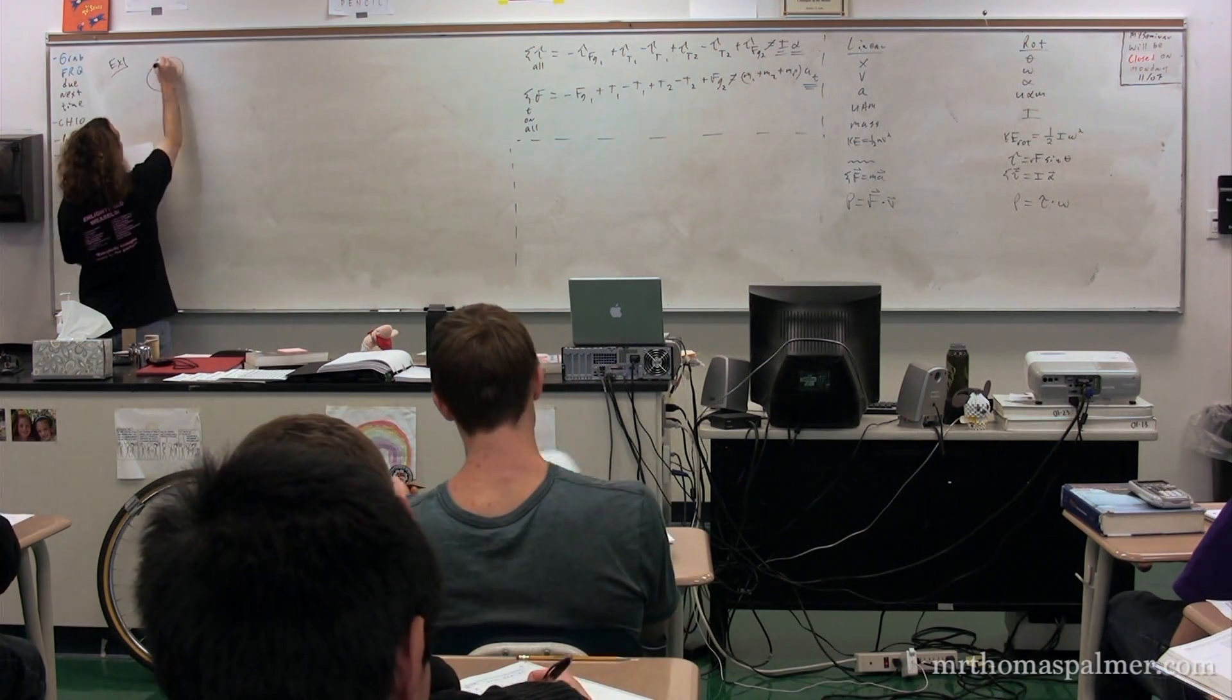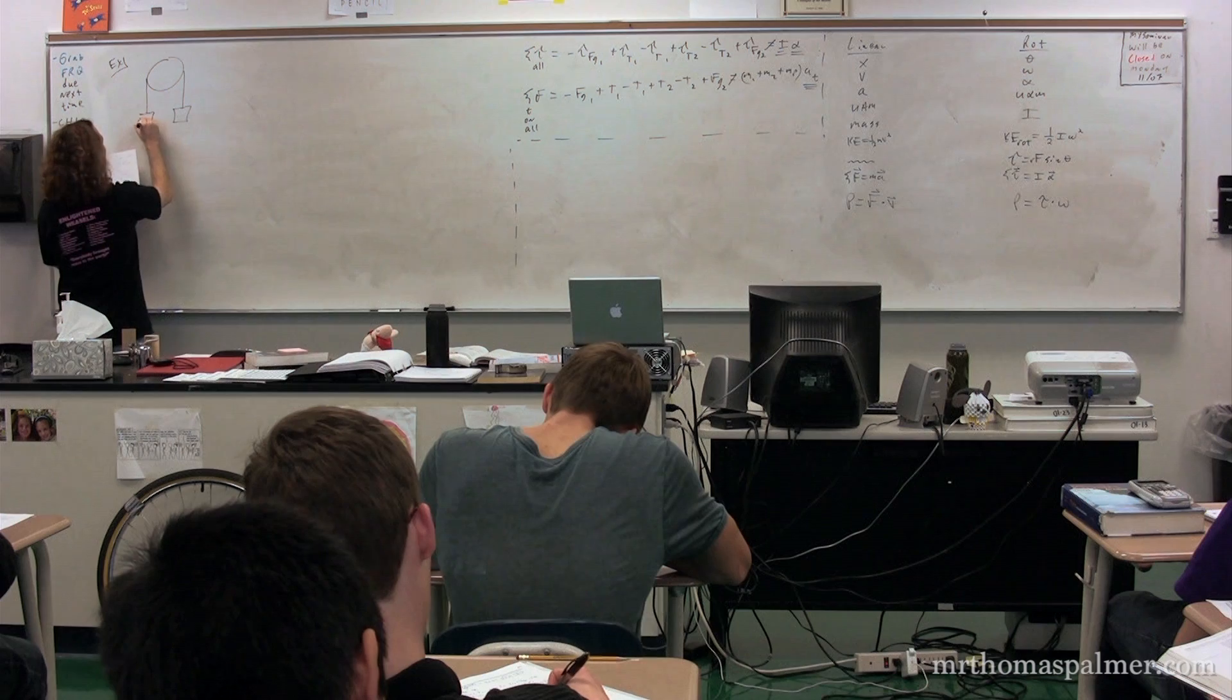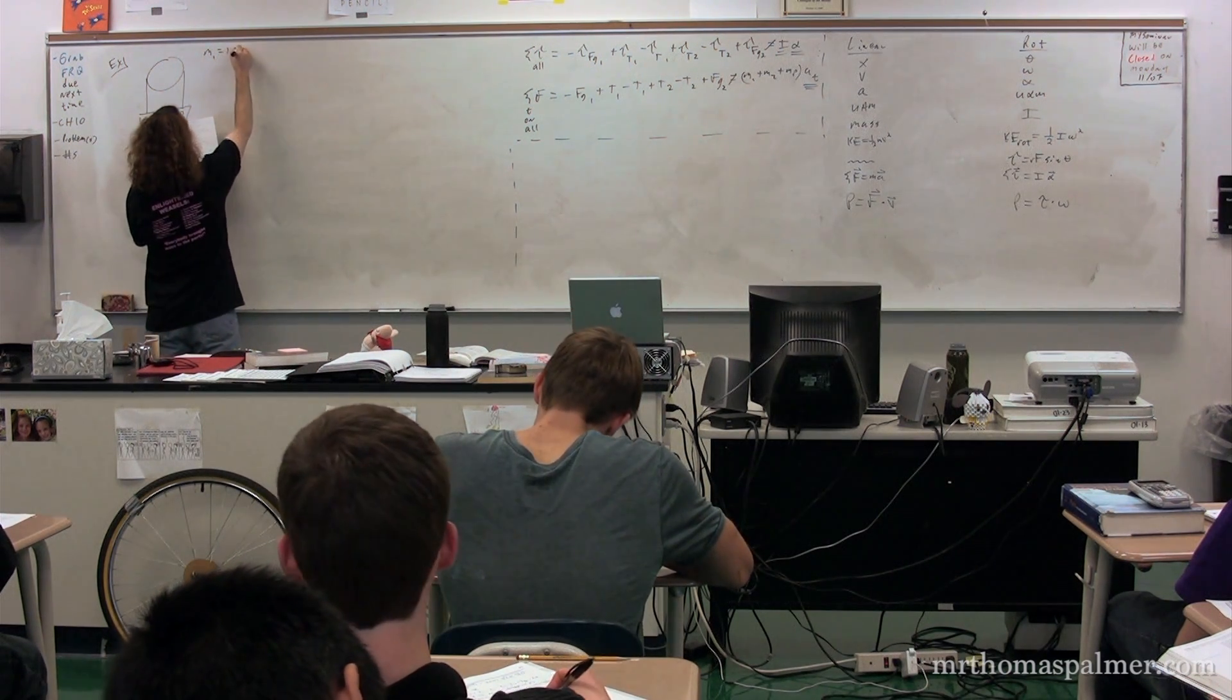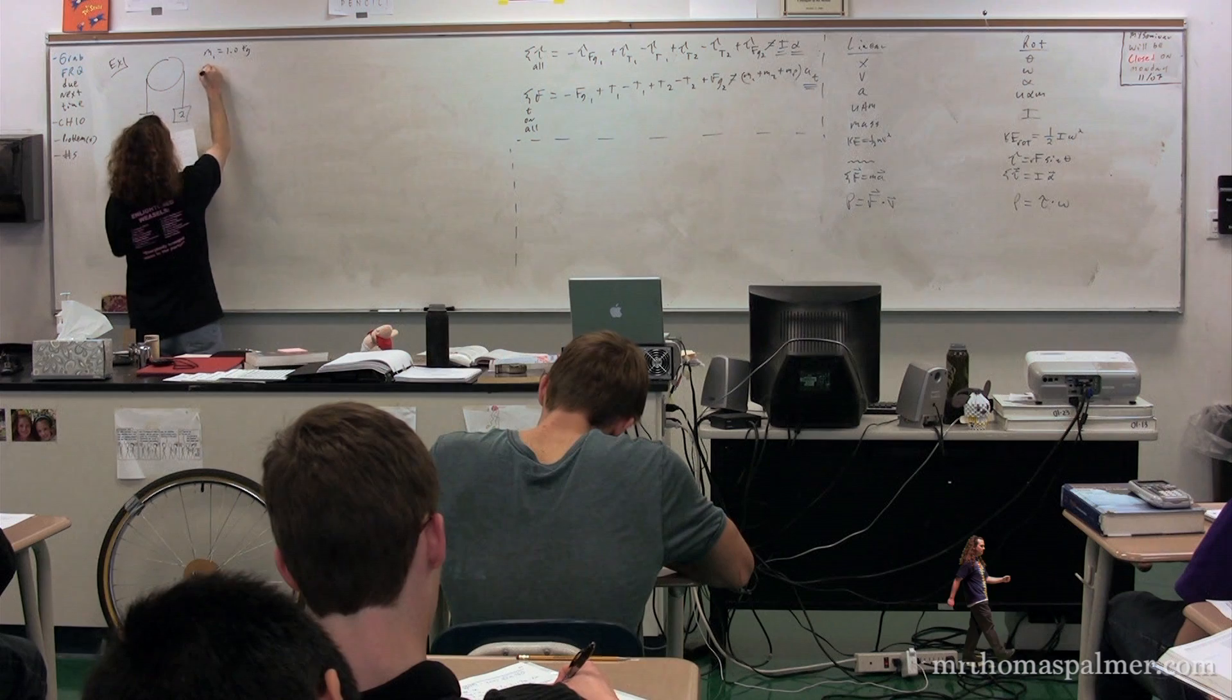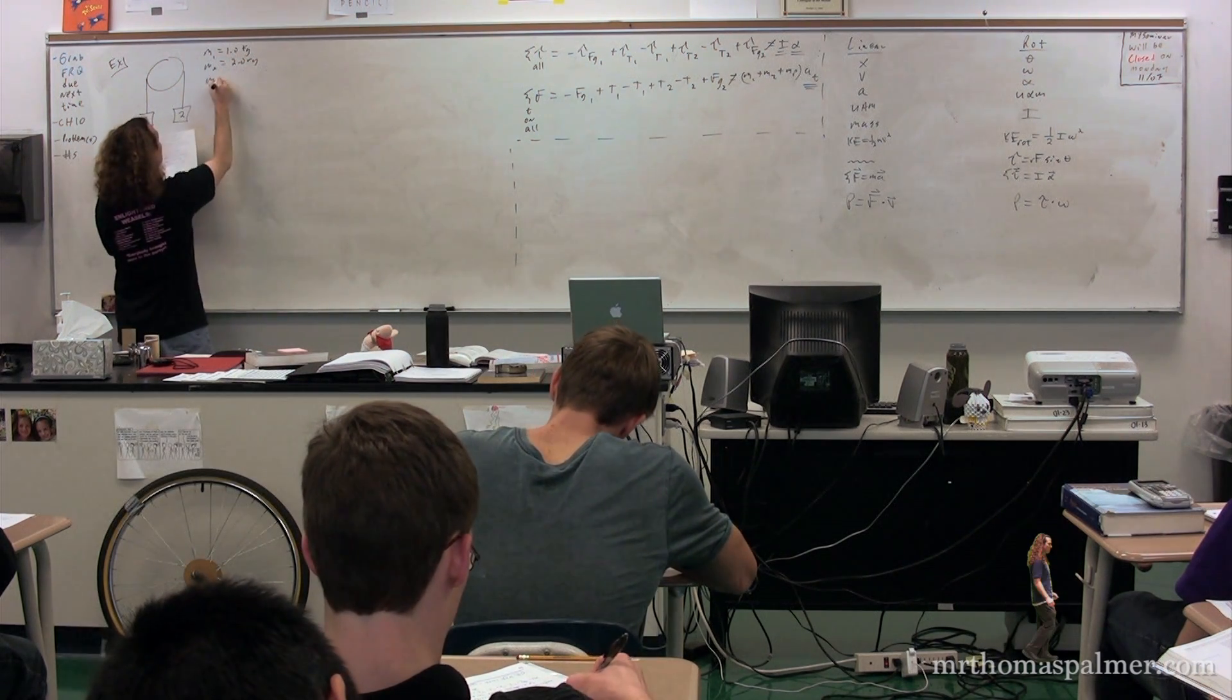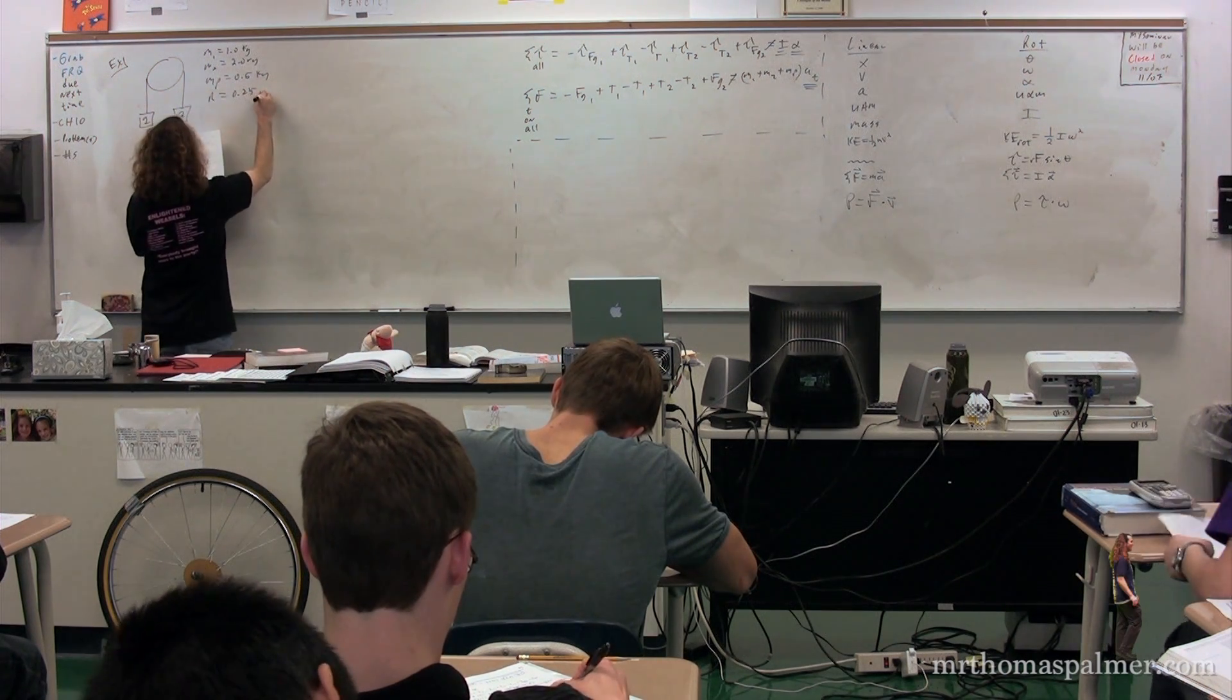Let's say we have a solid disk with two masses that are hanging from it. We're going to call the masses mass 1 and mass 2. Mass 1 is going to have a mass of 1.0 kilograms. Mass 2 is going to have a mass of 2.0 kilograms. The mass of the pulley is going to be 0.5 kilograms. The radius of the pulley is going to be 0.25 meters.